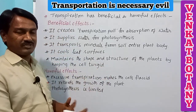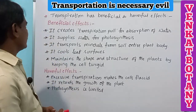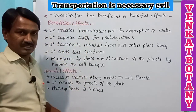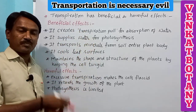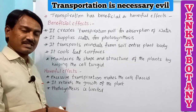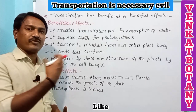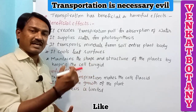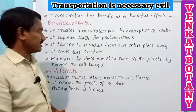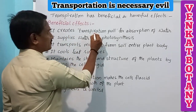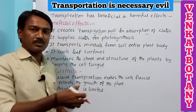Let us discuss the beneficial effects first. It creates a transpiration pull — the upward movement of water molecules against gravitational force — which is also called the ascent of sap. This transpiration pull is responsible for the absorption and movement of water molecules upward through the plant.